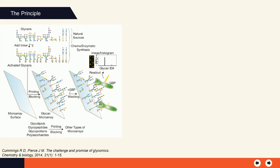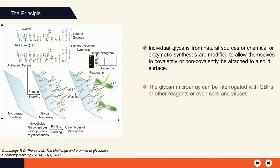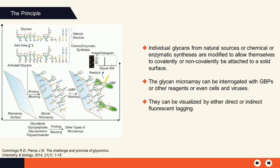In glycan microarrays, individual glycans from natural sources or chemical or enzymatic syntheses are modified to allow themselves to be covalently or non-covalently attached to a solid surface. The glycan microarray can be interrogated with glycan-binding proteins or other reagents, or even cells and viruses. Through this way, those recognized glycan spots are identified, which can be visualized by either direct or indirect fluorescent tagging. The results indicate that the glycan-binding proteins bound strongly to one glycan, less strongly to another, and do not bind appreciably to any other glycan. Such microarrays can also be prepared from glycolipids, glycopeptides, whole glycoproteins, or polysaccharides.